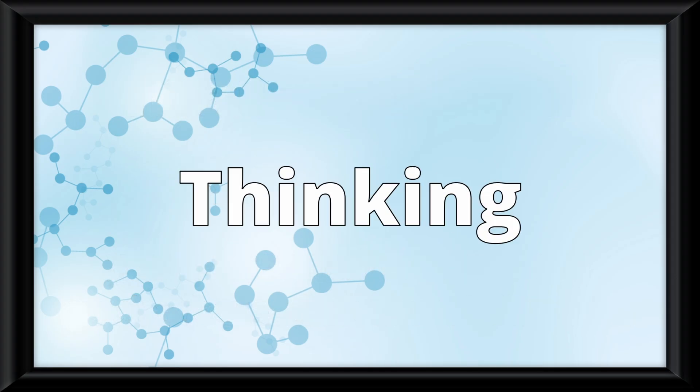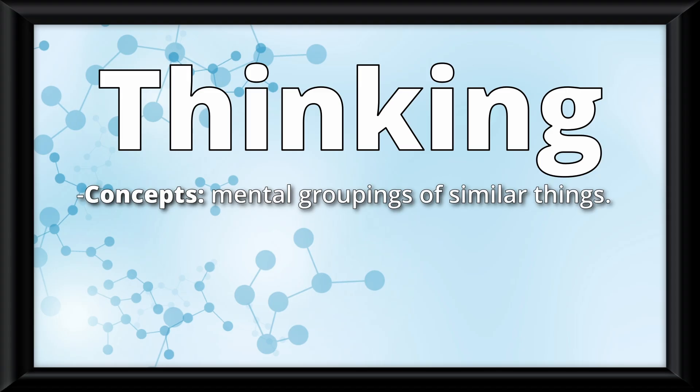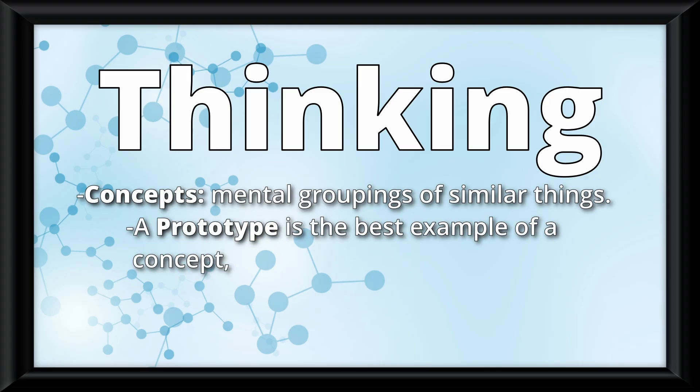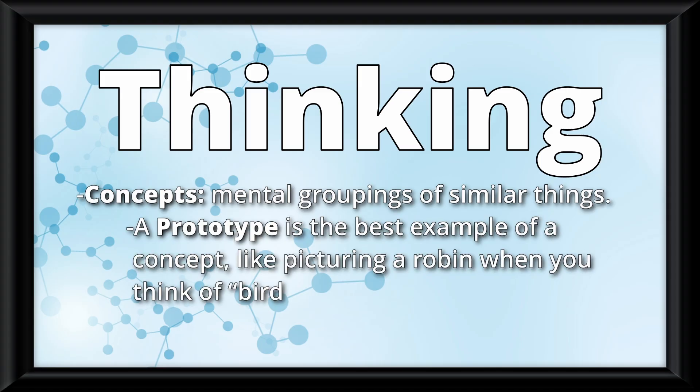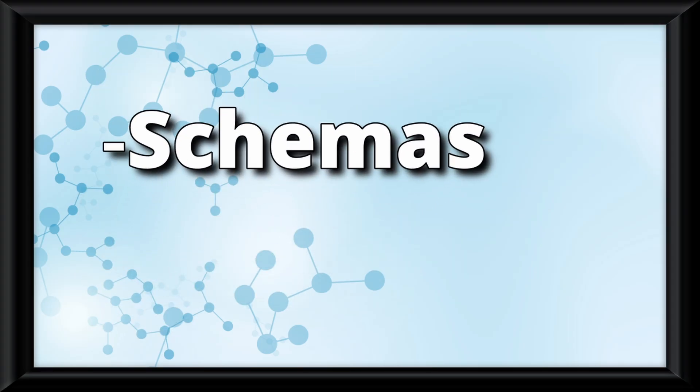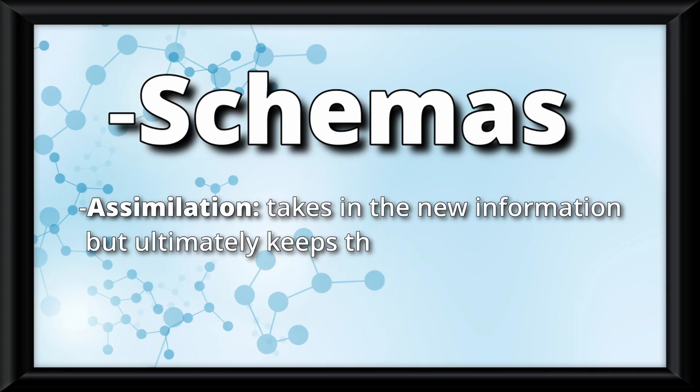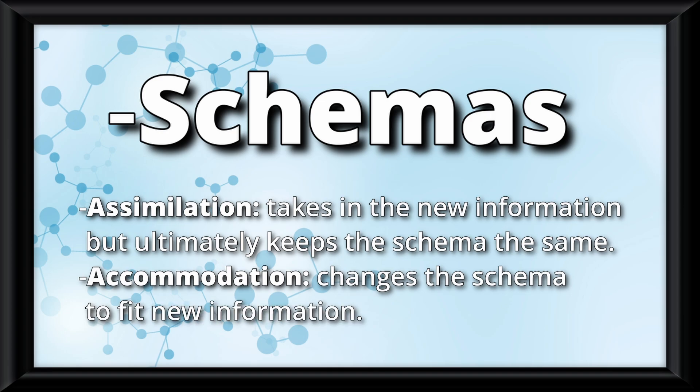Maybe we'll try and understand the basic way our brain thinks. Thinking starts with concepts, which are mental groupings of similar things. A prototype is the best example of a concept, such as picturing a robin when you think of a bird. We also use schemas, which we already talked about last video, for understanding. New information is fit into schemas through assimilation, which takes in new information but ultimately keeps the schema the same, or accommodation, which changes the schema to fit new information.